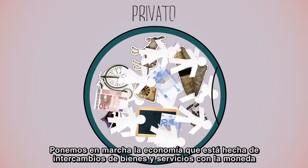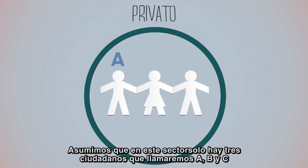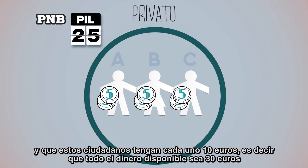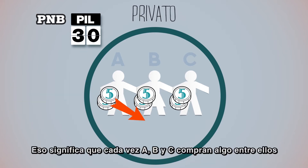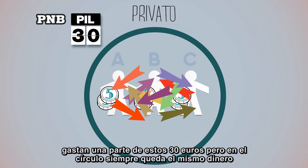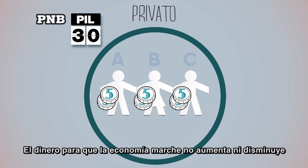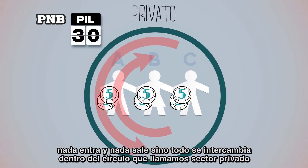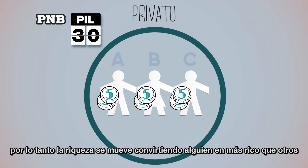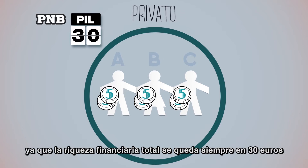Mettiamo in moto l'economia, che è fatta di scambio di merci e servizi, con la moneta. Fingiamo che in questo settore ci siano tre cittadini che chiameremo A, B e C, e che questi cittadini abbiano 10 euro a testa, ovvero che tutti i soldi disponibili siano 30 euro. Ciò significa che tutte le volte che A, B e C comprano qualcosa tra di loro, spendono una parte di questi 30 euro, ma i soldi nel cerchio restano sempre gli stessi. I soldi, per fare girare l'economia, non aumentano e non diminuiscono. Nulla esce e nulla entra, ma tutto viene scambiato all'interno del cerchio, che abbiamo chiamato settore privato, quindi la ricchezza si sposta facendo diventare qualcuno più ricco di altri.